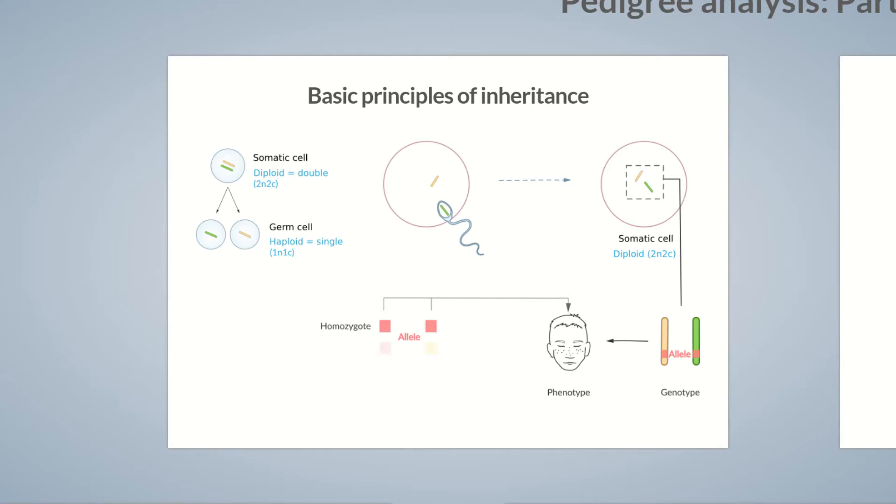If each parent provides a different allele for a specific trait, then the term heterozygous is used. Theoretically, there are two phenotypes that can be expressed in heterozygous individuals, the maternal or the paternal phenotype.